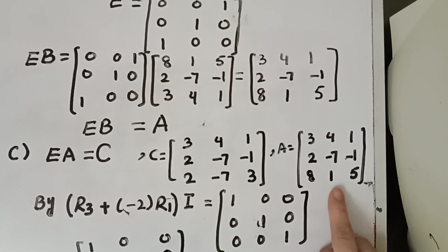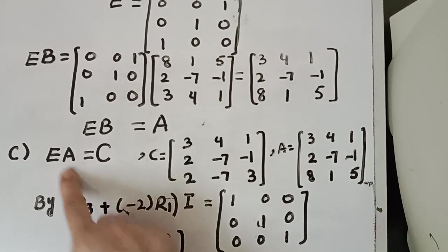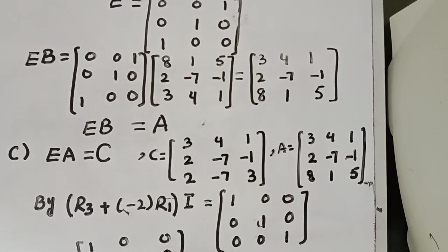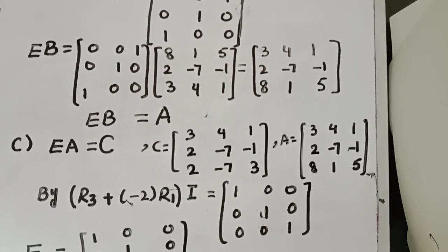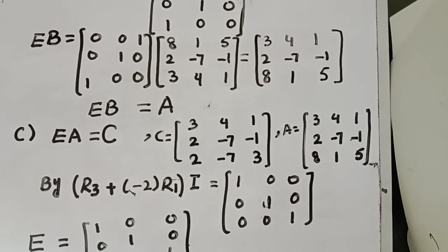We can't apply the row operation directly to A. With the help of matrix multiplication, we have to perform this row operation to get the resultant C. This is called matrix multiplication. This is why the concept is revised — that an elementary matrix is basically a function.